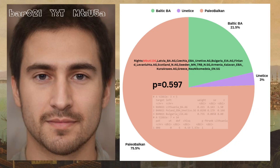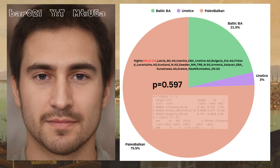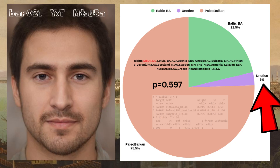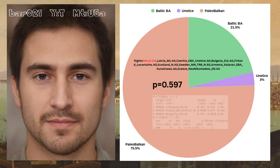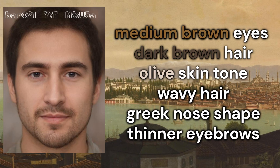Consult this Bronze Age population breakdown. I have run this sample through my typical Slavic split model. According to this run, the overwhelming majority of his ancestry is Paleo-Balcan at 75%, with some strong Baltic admixture at 21.5%. There is nothing that would suggest Germanic or Celtic ancestry, as his share of Anatolian ancestry is quite low at 3%. Based on this breakdown, we can estimate anywhere from 35% to 50% Slavic ancestry in this sample.